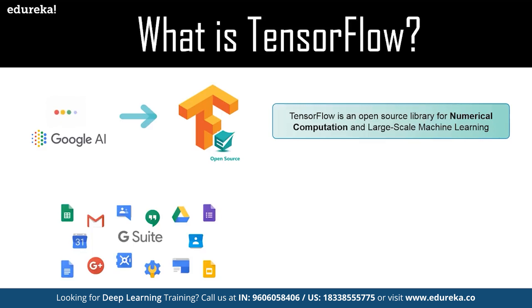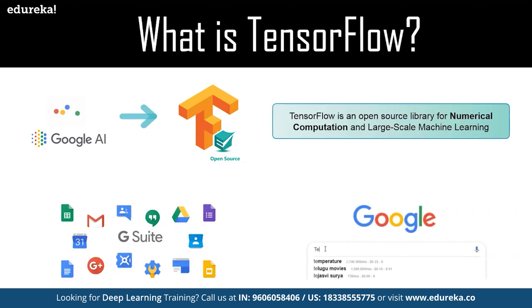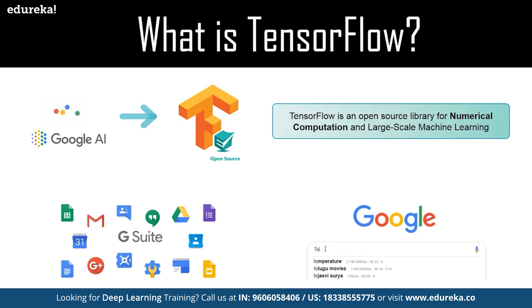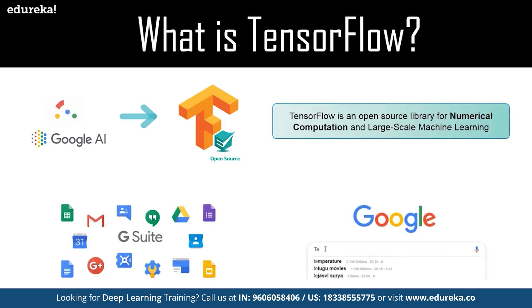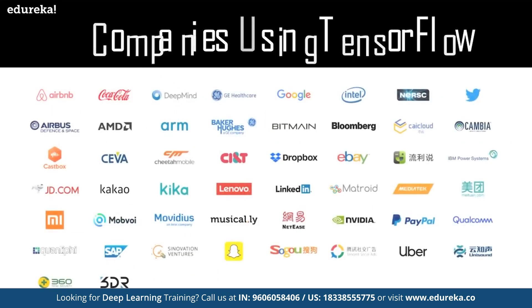TensorFlow bundles together a suite of machine learning and deep learning models and algorithms and makes them useful. Google uses machine learning in all of its products to improve the search engine, translation, image captioning, and recommendations. For example, if a user types a keyword in the search bar, Google provides a recommendation about what the next word could be.